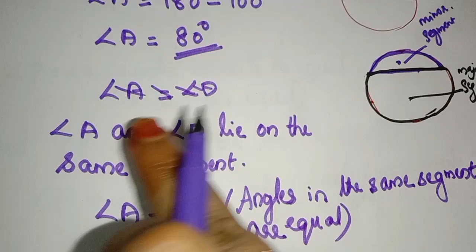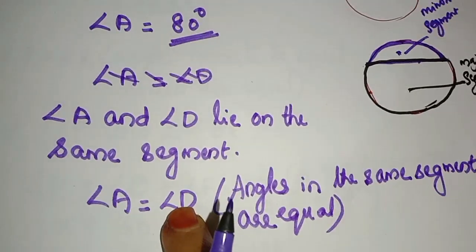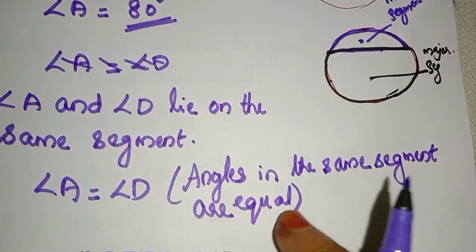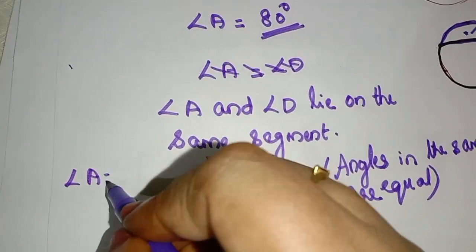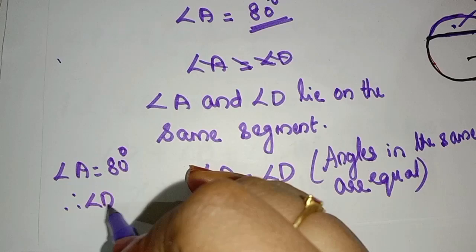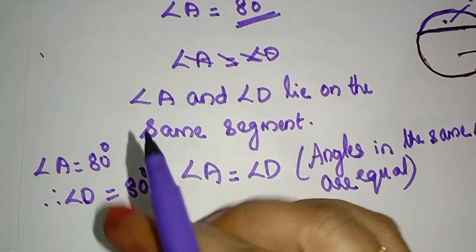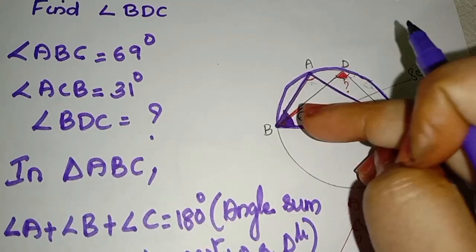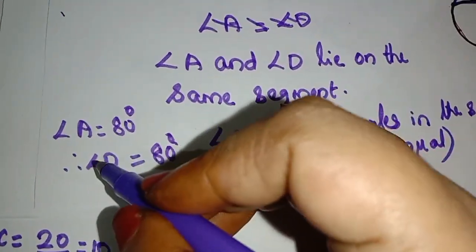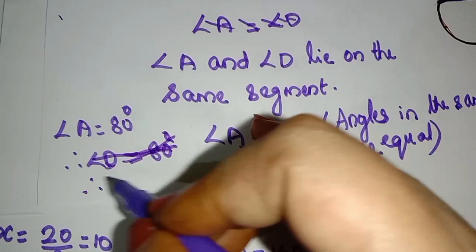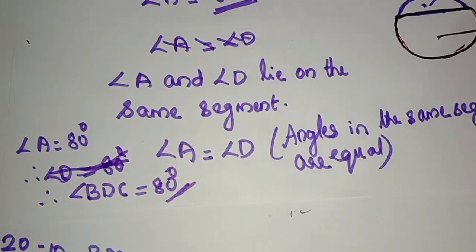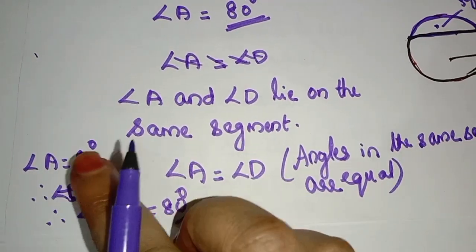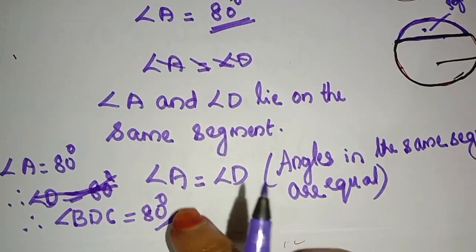Angle A is equal to 80 degrees. Since angle A and angle D lie on the same segment, angles in the same segment are equal. Therefore, angle BDC is equal to 80 degrees.